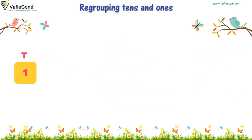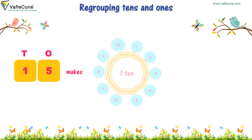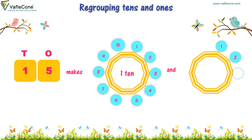One, five — fifteen makes one ten and one, two, three, four, five. Five, one.